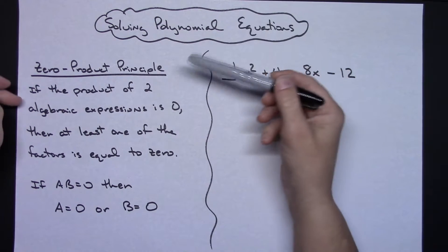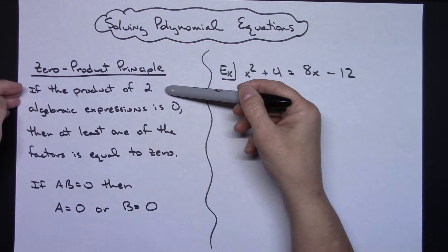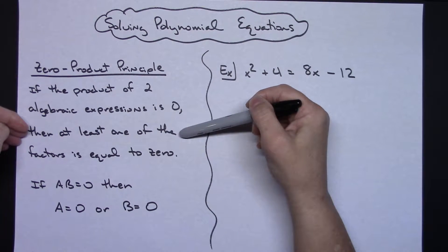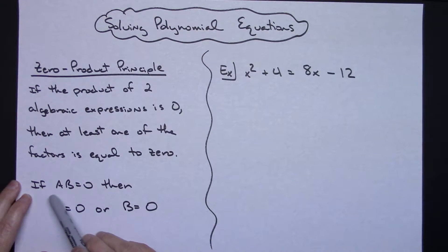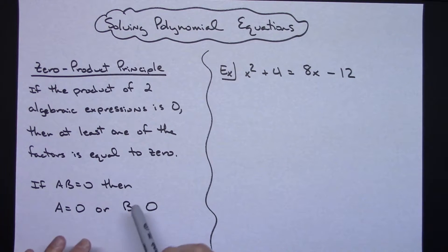The zero-product principle basically just says that if the product of two algebraic expressions is zero, then at least one of the factors is equal to zero. In other words, if a times b equals zero, then I know that either a equals zero or b equals zero. That's what we're going to focus on here with these polynomials that are of degree 2.